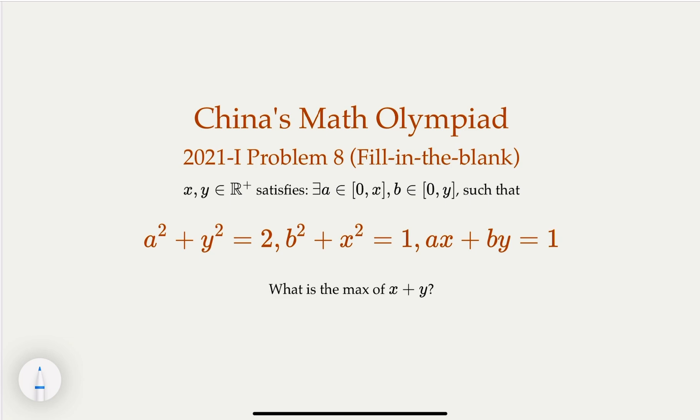This is 2021 China's Math Olympiad, the fill-in-the-blank problem. We're given x, y positive real numbers such that there exists a, b, which is smaller than x and y, with these constraints: a squared plus y squared equal to 2, b squared plus x squared equal to 1, ax plus by equal to 1. We try to find the max of x and y.